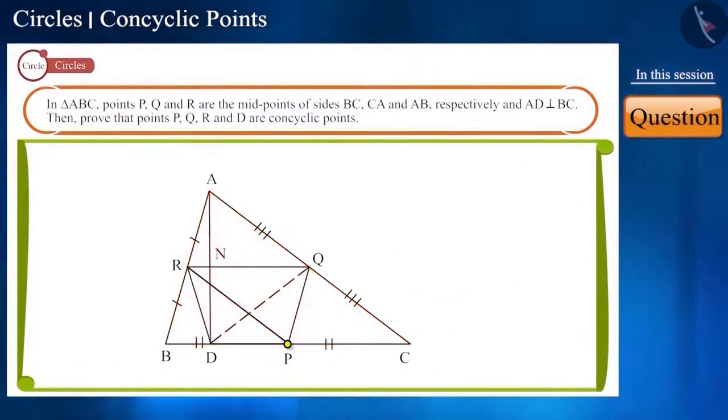In triangle ABC, points P, Q and R are the midpoints of sides BC, CA and AB respectively, and AD is perpendicular to side BC.